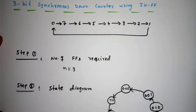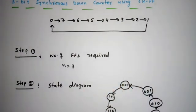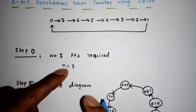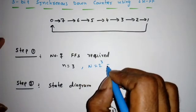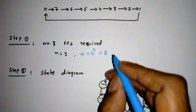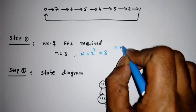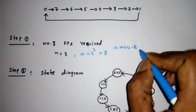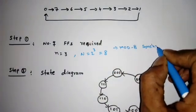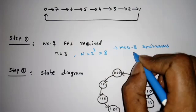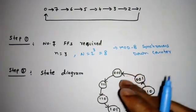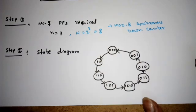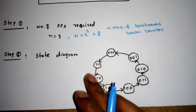Step 1 is to find the number of flip-flops required. Since it is a 3-bit counter, we need 3 flip-flops. The maximum count N is equal to 2 power 3, which is 8. So this is also called a modulus 8 synchronous down counter.